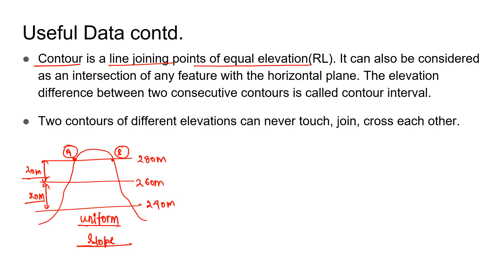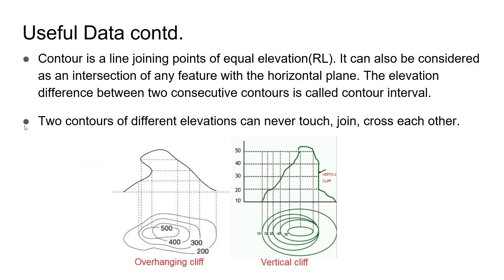This is a property of contours. The second property is that two contours of different elevations can never touch, join, or cross each other. But we have two exceptions: overhanging cliff and vertical cliff. In an overhanging cliff, if we take the projections of these lines, we see there are points where the contour lines coincide with each other.